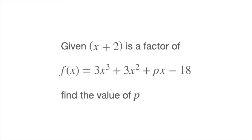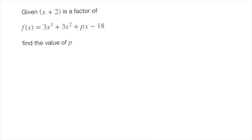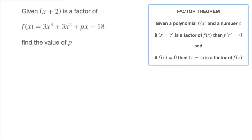In this example, we're told that x plus 2 is a factor of the polynomial f of x, which equals 3x cubed plus 3x squared plus px minus 18. Once more, we're asked to find the value of p, where p is the x to the power of 1 coefficient. The reasoning here is identical to what we've just seen. The factor theorem therefore allows us to state that negative 2 must be one of this polynomial's zeros.